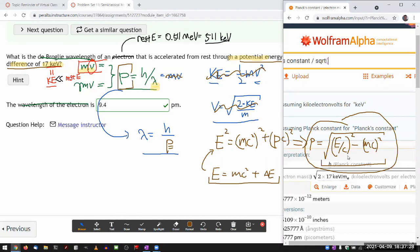So 511, that's the rest energy of electron, 511 plus 17, that's the kinetic energy that I'm adding, keV, that's the amount of total energy of the electron.